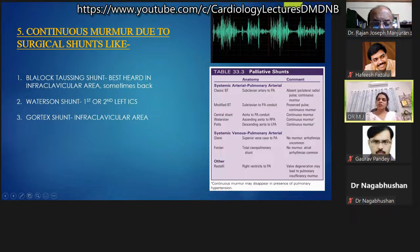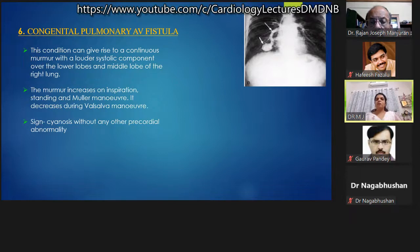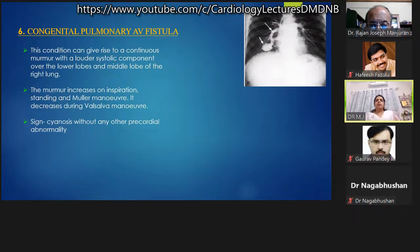Congenital pulmonary arteriovenous fistula can give rise to a continuous murmur with a louder systolic component over the lower and middle lobes of the right lung, as it is more common on the right side. The murmur increases on inspiration, on standing, and with Müller's maneuver; it decreases during Valsalva maneuver. An important point: if a patient has cyanosis without any other precordial murmur or cardiac abnormality, one should look for pulmonary arteriovenous fistula.